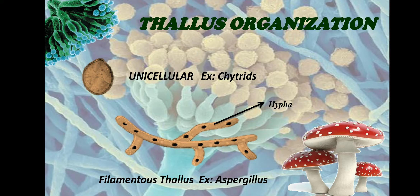The thallus of fungi could be unicellular or multicellular. A unicellular thallus is usually seen in lower fungi. The thallus of unicellular fungi is spherical in shape.